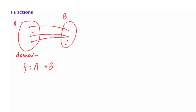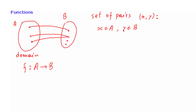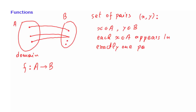A function is a rule that assigns points of A to points in B. If we want to be more precise, a function would be defined as a set of pairs of values — pairs of the form (x, y), such that x is always an element of A, y is always an element of B, and each x in A appears in exactly one pair. So this would be a formal definition of what a function is: a collection of ordered pairs of this kind.